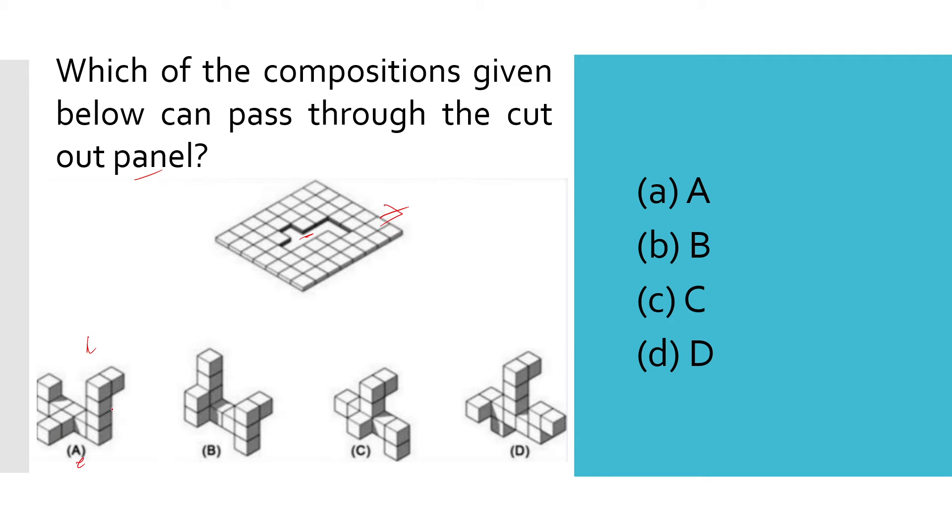First one: if you try to pass from this side, it's not possible because we have an L shape, so there should be an L shape. If you try to pass like this, then this will be obstructed. So this is wrong.